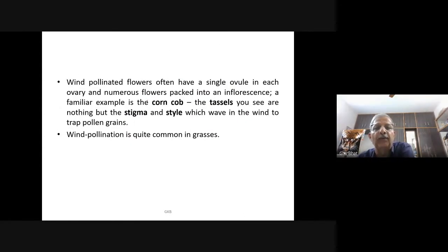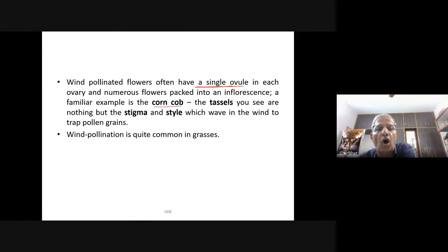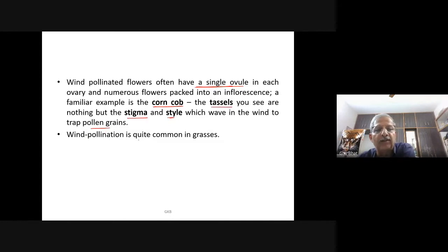Wind-pollinated flowers often have a single ovule in each ovary, and numerous flowers are packed into an inflorescence. A familiar example is the corn cob. The tassels you see on corn are nothing but the stigma and style which wave in the wind to trap pollen grains. Wind pollination is quite common in grasses.